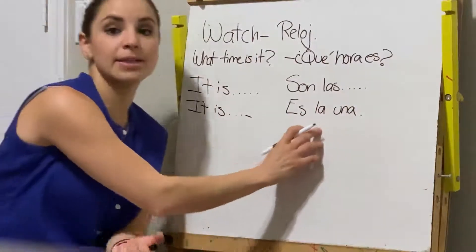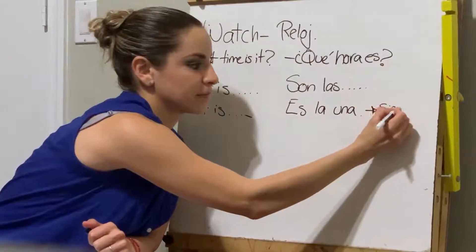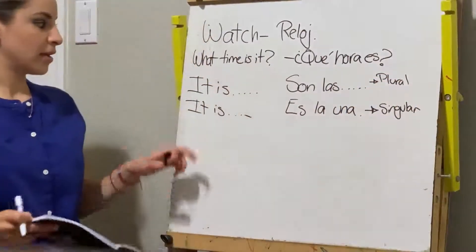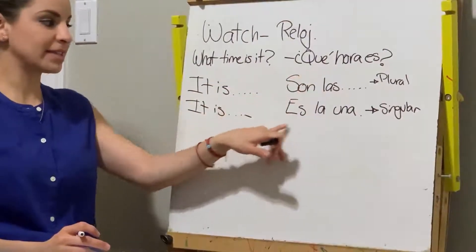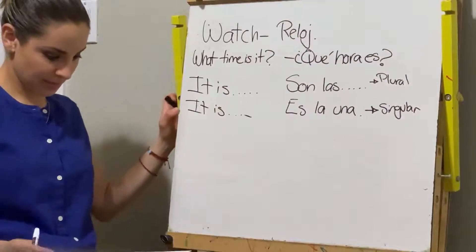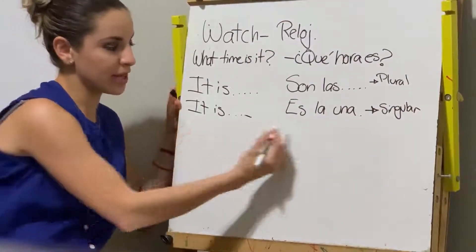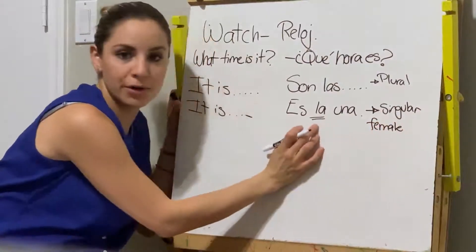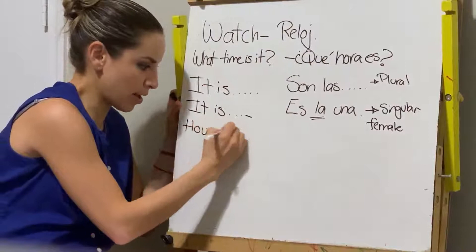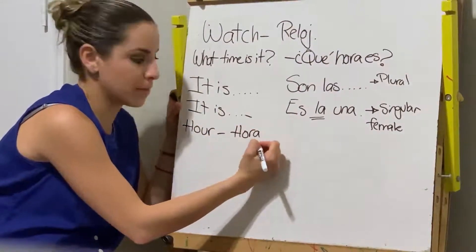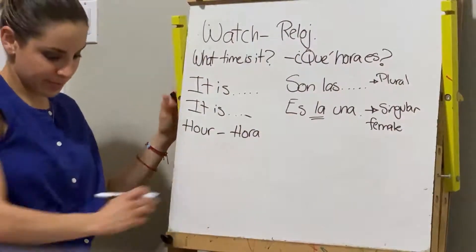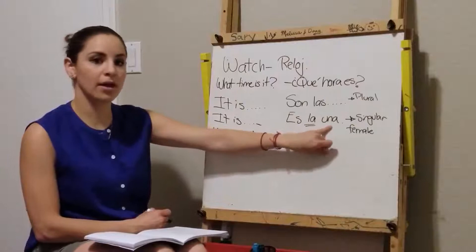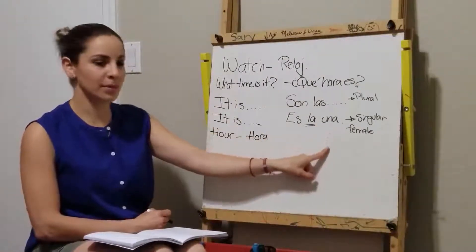This one uses 'es la' because it is singular. What time is it? ¿Qué hora es? Es la una. This is because we are using singular and feminine, because 'hour' is 'hora' — and it's a feminine word. That's why we use 'la.' Es la una.